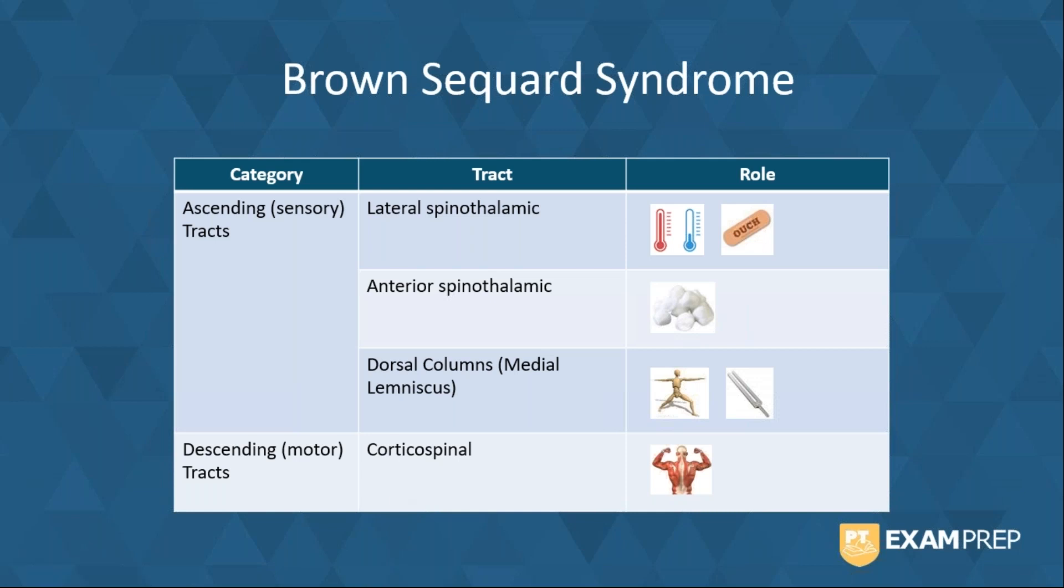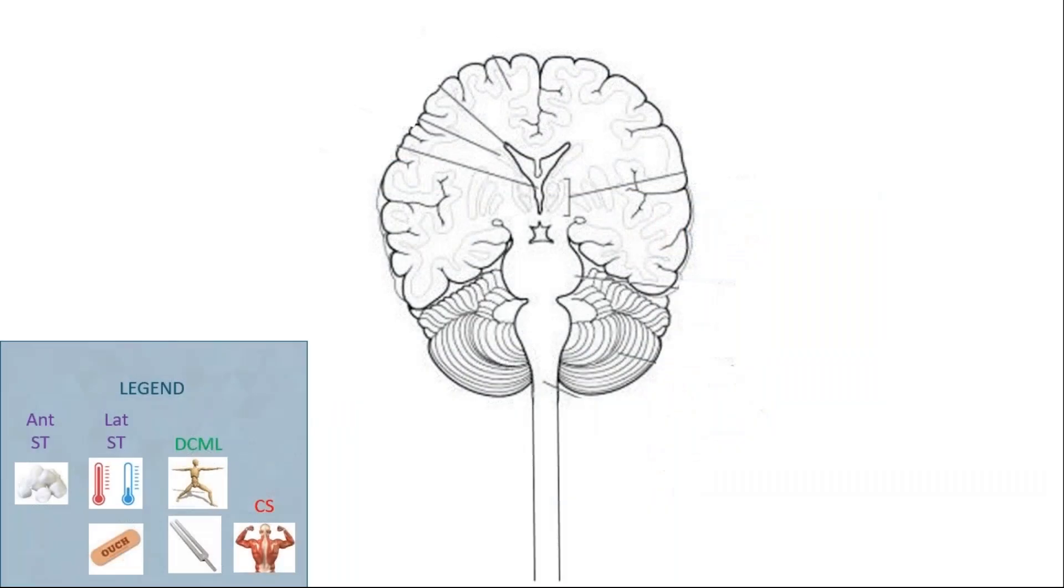Now there is one descending motor tract you should be familiar with, and this is the corticospinal tract. This tract carries motor information from the brain to the muscles in the body.